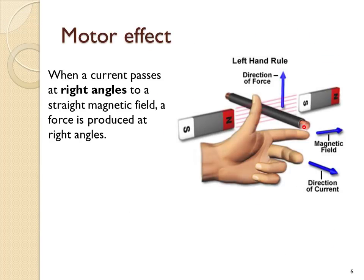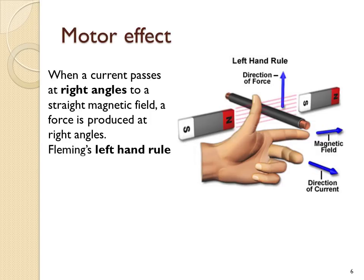When a current passes at right angles to a straight, uniform magnetic field, a force is produced at right angles to both the current and the field. The easiest way to think about the relationship between these three things is using your left hand. The thumb points in the direction of force that the wire will experience. The first finger shows the direction of magnetic field — remember, field lines point from north to south. And the second finger points in the direction of current, that's from plus to minus. This is called Fleming's left-hand rule.